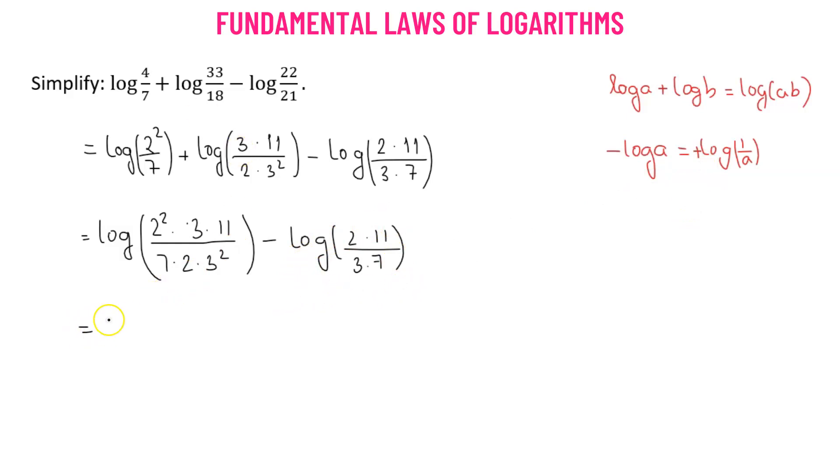Applying this property to the second term, we have log of 2 squared times 3 times 11, divided by 7 times 2 times 3 squared, plus log of the reciprocal of 22 over 21, which becomes 3 times 7